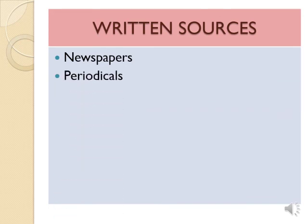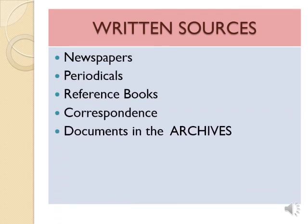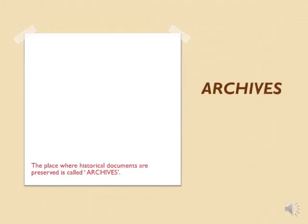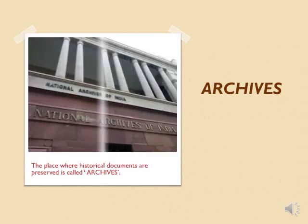The following sources are included in the written sources: newspapers, periodicals, reference books, correspondence, documents in the archives, government gazettes, postage stamps, and encyclopedias. The place where historical documents are preserved is called Archives. The main office of the National Archives of India is at New Delhi, and it is the largest among the archives in Asia.